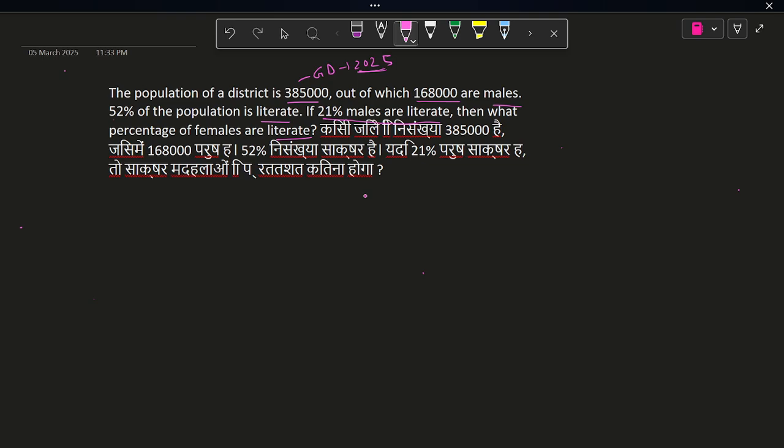So we can do this math by the deviation method. To apply deviation method, first we have to find what is the ratio of males to females. So here the total population is